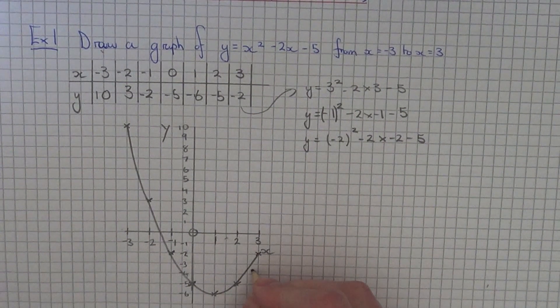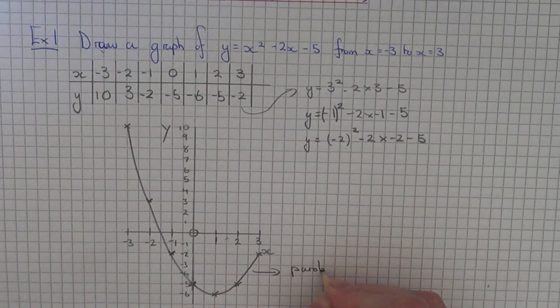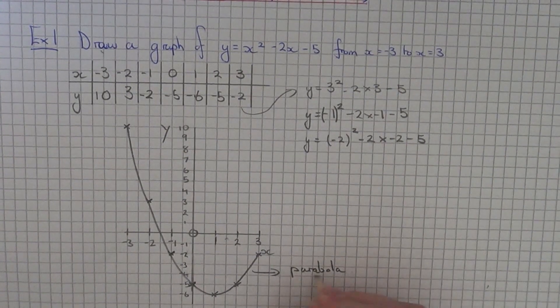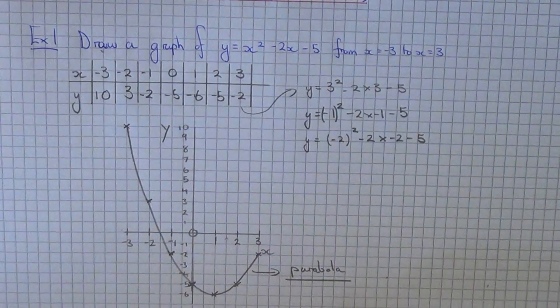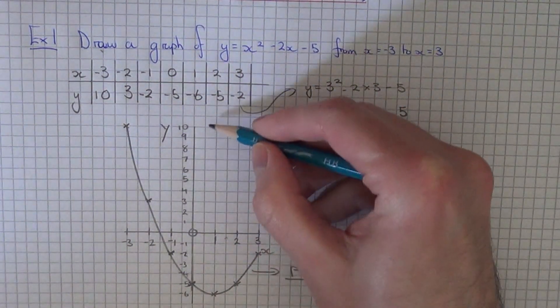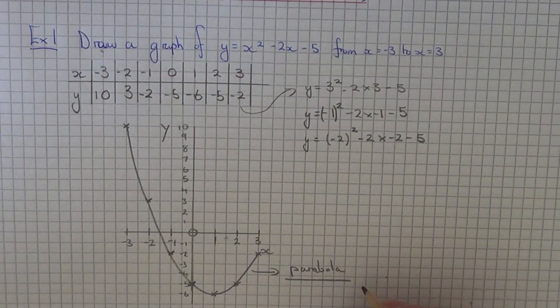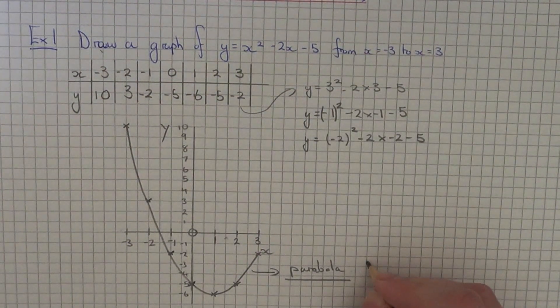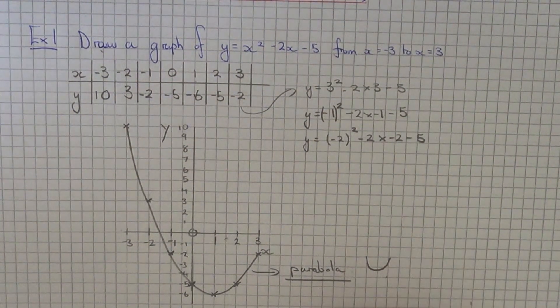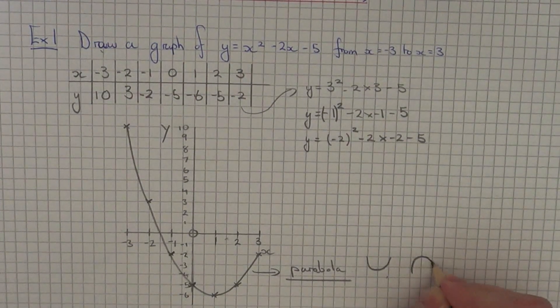So this curve is called the parabola. So if you keep going it would be symmetrical about the point x equals 1. So all quadratic graphs should come out as u shapes. If it's minus x squared it will be upside down.